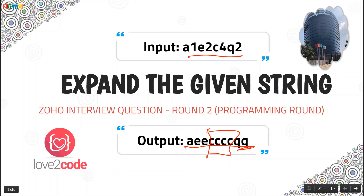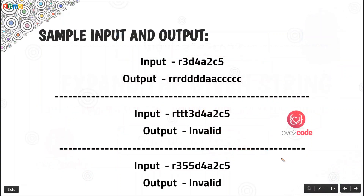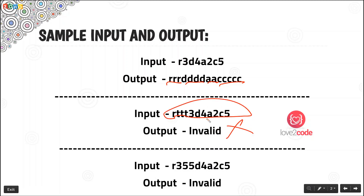Let's see a few other test cases. For input r3 d4 a2 c5, 'r' is printed three times, 'd' four times, 'a' twice, and 'c' five times. Here is another input: 'rtttt3' — this is an invalid input. And 'r355' is also an invalid input. We should handle these cases as well.